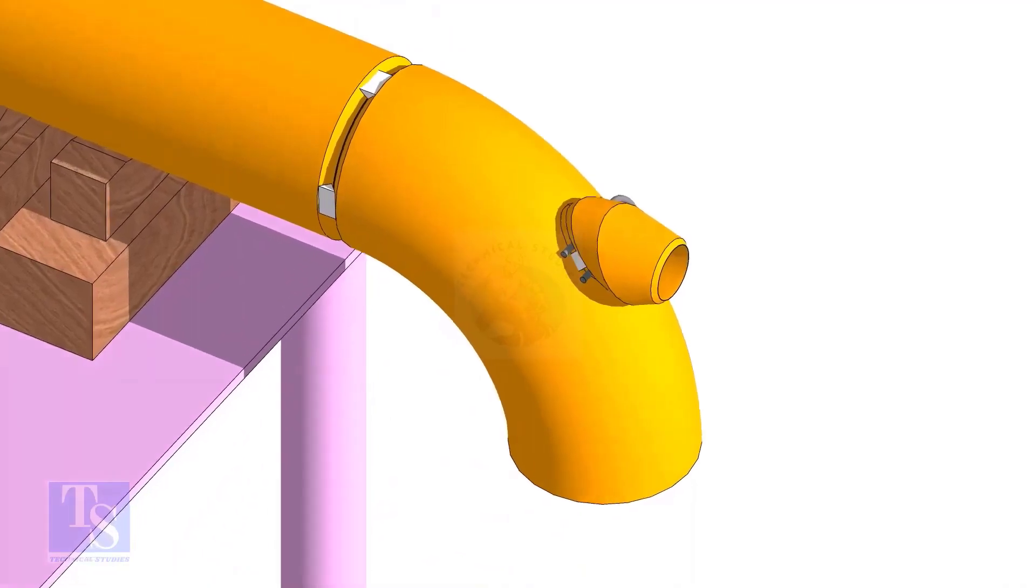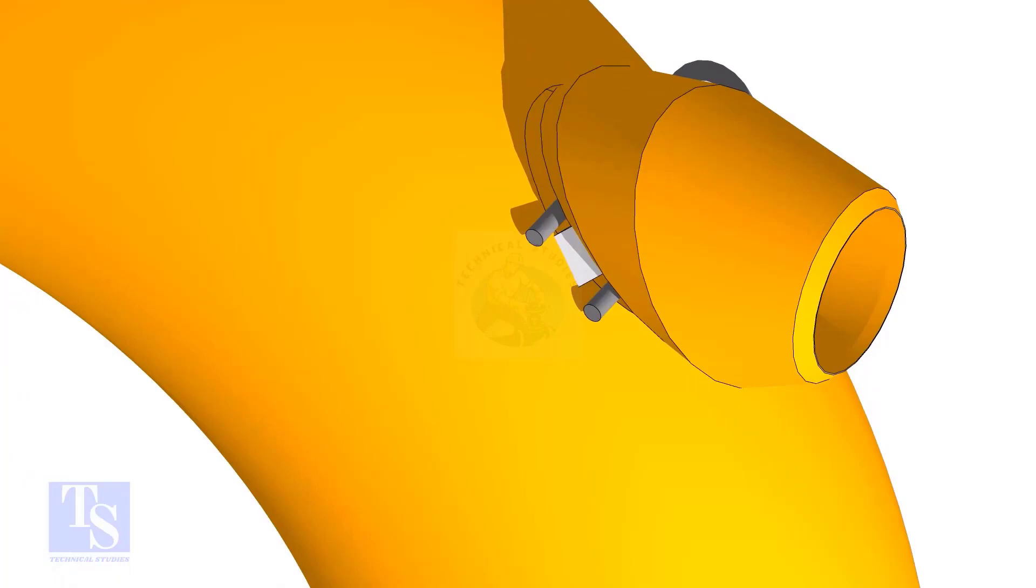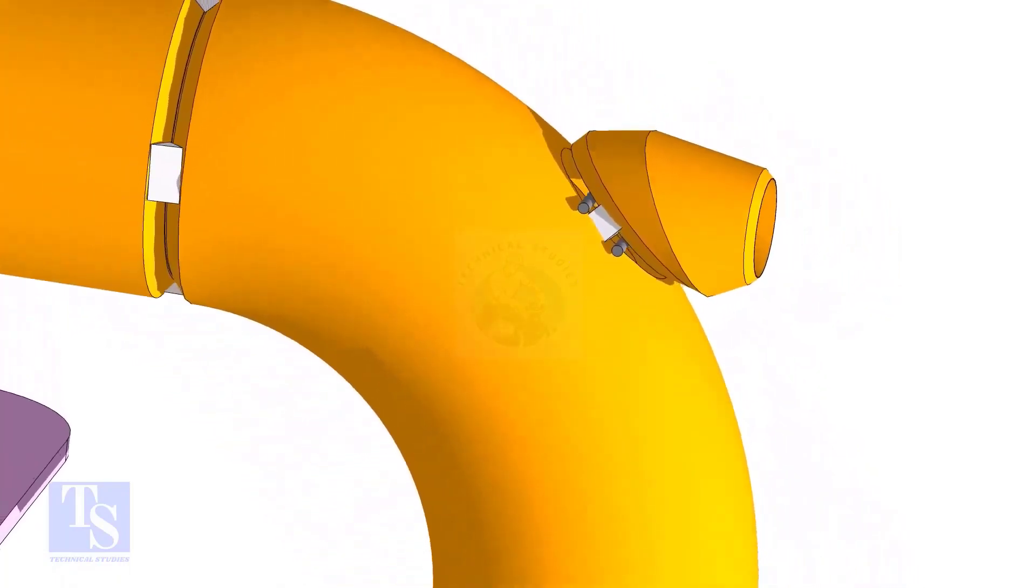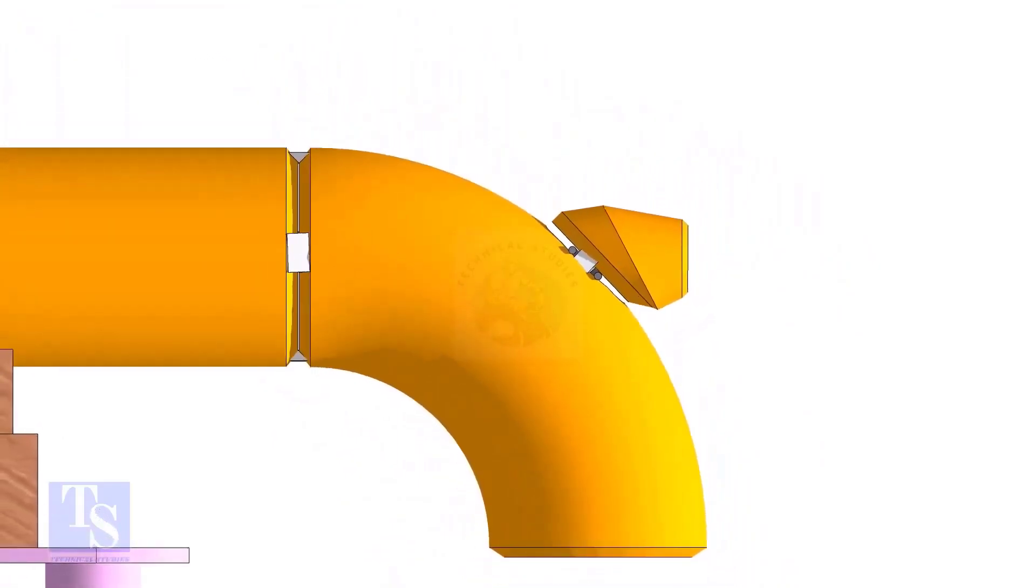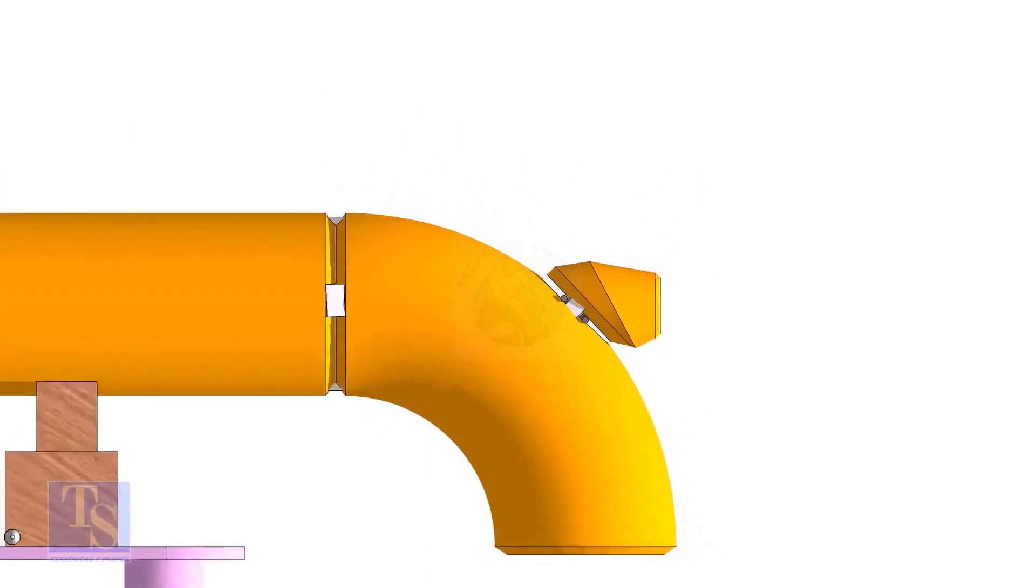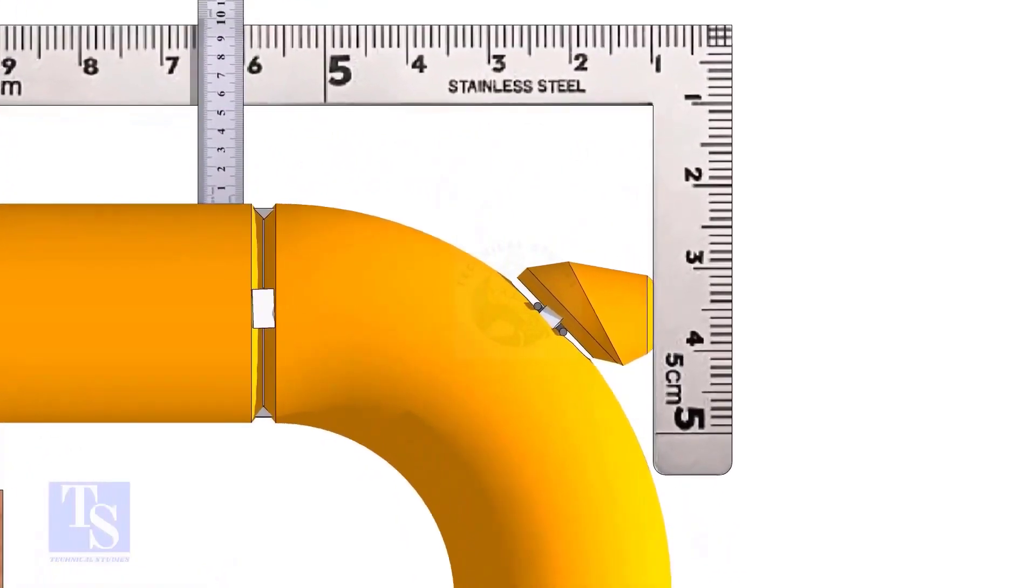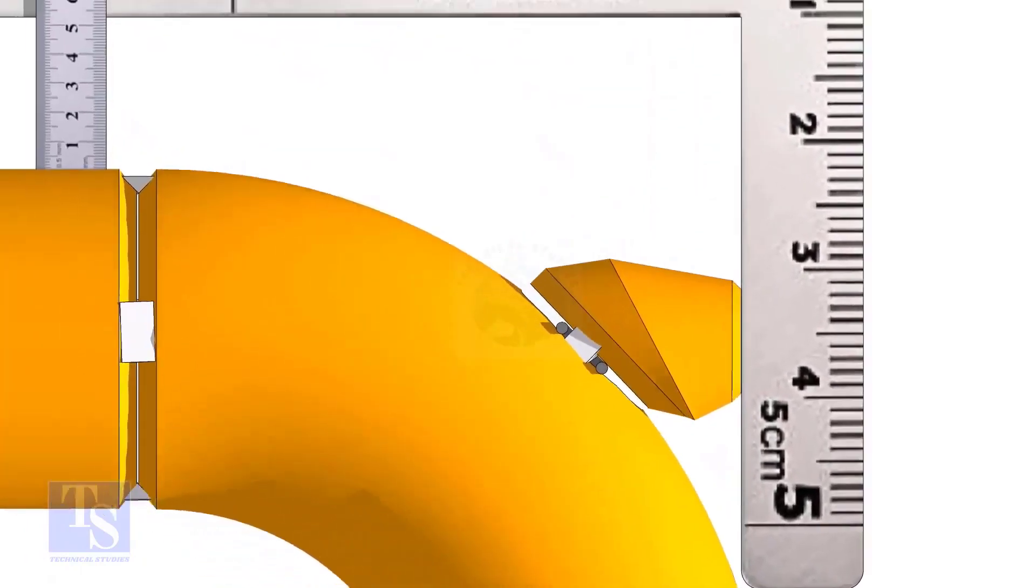Tack weld on the opposite side. Maintain the vertical squareness, and tack weld on the top and bottom side of the elbowlet.